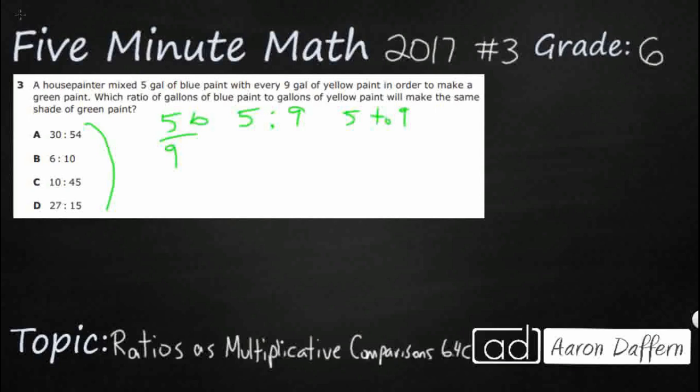So I'm going to label mine, though, because I want to make sure that I keep this 5 blue, not just 5 of anything. Labels are very important with ratios, and then 9 gallons of yellow. So we need to find one of these, A, B, C, or D, that could match this same ratio. So really we're looking to compare here and find an equivalent fraction.